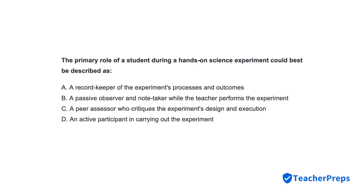The primary role of a student during a hands-on science experiment could best be described as? Correct response is letter D, active participant in carrying out the experiment.